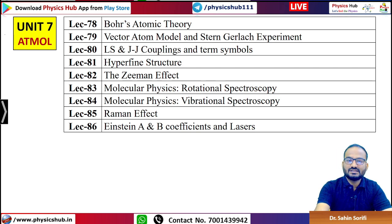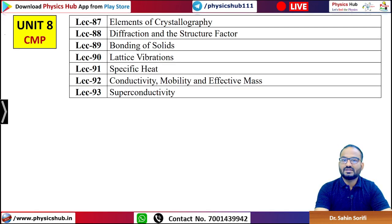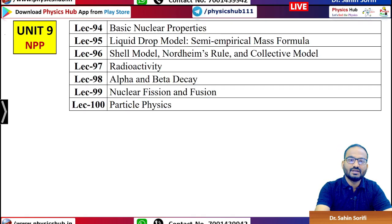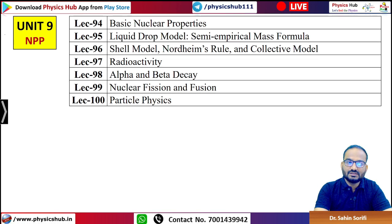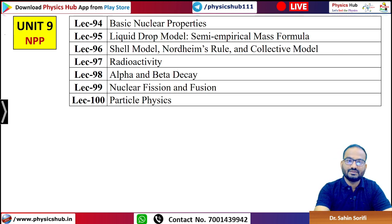Unit 8 is Condensed Matter Physics — elements of crystallography, X-ray diffraction, structure factor, bonding in solids, lattice vibrations, specific heat, conductivity, mobility, effective mass, and superconductivity. Unit 9 covers basic nuclear properties, the liquid drop model, semi-empirical mass formula, shell model, collective model, radioactivity, alpha and beta decay, nuclear fission, nuclear fusion, and particle physics.